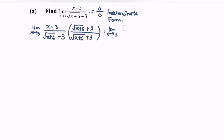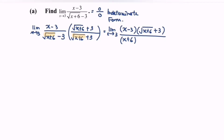So in here, the limit as x approaches 3 for the function: (x minus 3) multiplied by (square root of x plus 6, plus 3) over — if we expand the denominator, we will have (x plus 6), then expanding further we get 3 times square root of x plus 6, next minus 3 times square root of x plus 6.